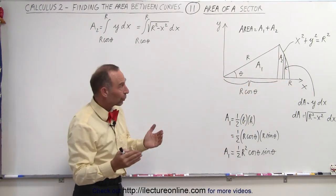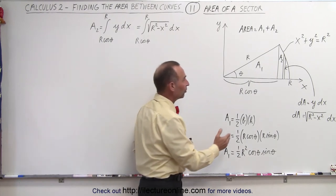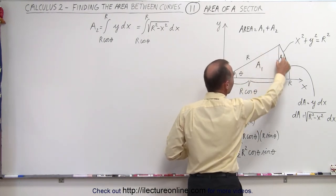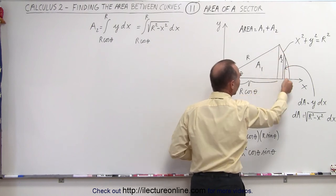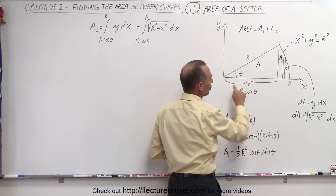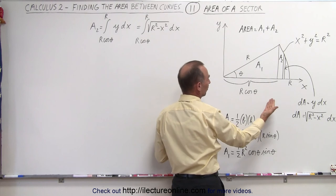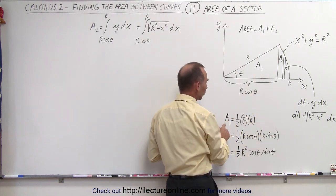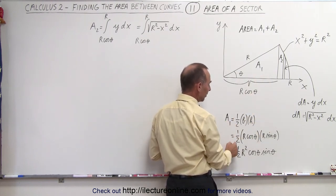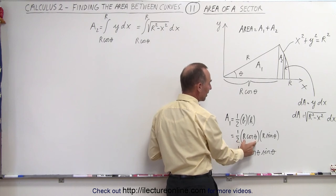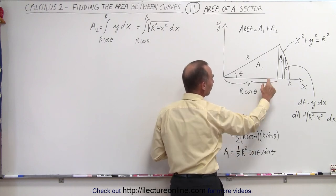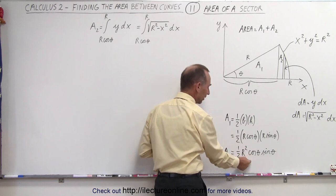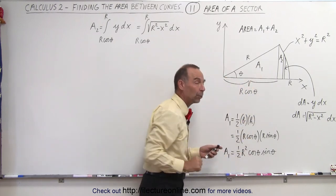We're going to subdivide it into two sections: A1, which is simply the triangle, and A2, which is that last curved part. Notice that the area of A1, since it's simply a triangle, is going to be one-half the base times the height. The base is r times the cosine of theta, and the height is r times the sine of theta.